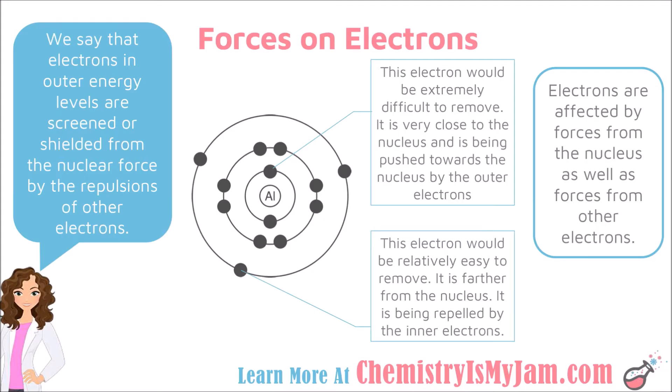In contrast, an electron on a lower energy level would be extremely difficult to remove. It is very close to the nucleus, and the electrons farther out are actually pushing it toward the nucleus. So an electron on an inner energy level would be extremely difficult to remove.